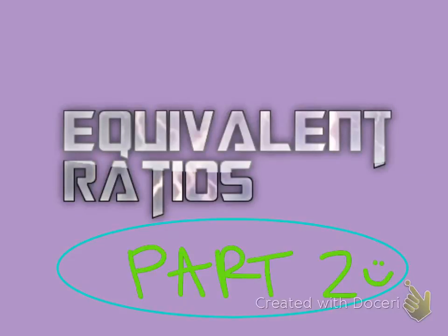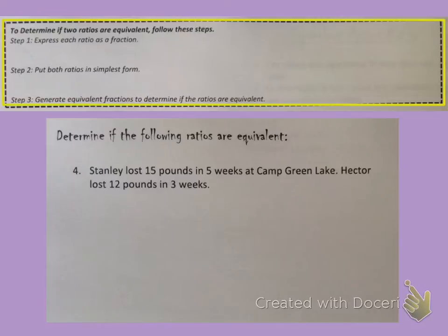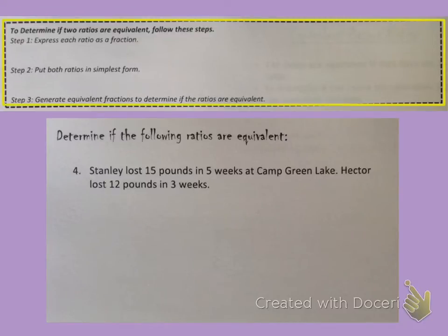Equivalent Ratios, Part 2. Now we are going to try to determine if two ratios are equivalent, and here's how we do this. Step 1 is to express each ratio as a fraction. Step 2 is to put both ratios in simplest form, and then step 3 is to generate equivalent fractions if necessary to determine if the ratios are equivalent to one another.